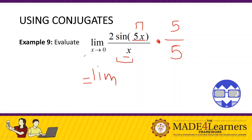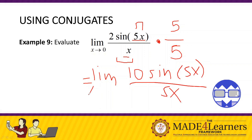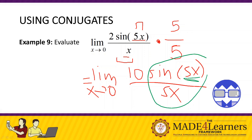Simplifying: the limit of 2 times 5 — these are constants, so 2 times 5 is 10 — times sine of 5x all over 5x, as x approaches zero. Now sine of 5x over 5x is sine theta over theta, and the angle and denominator are the same, so this equals one. Hence the answer is 10.